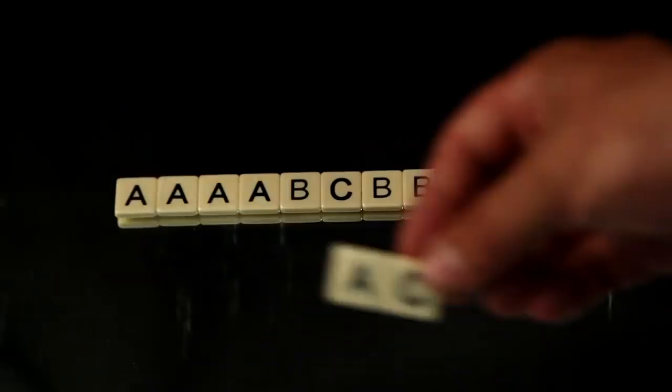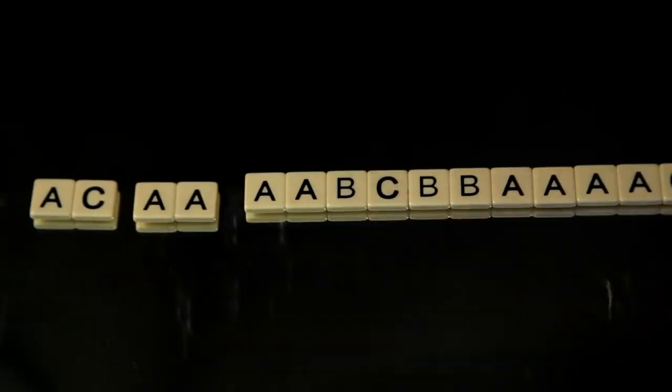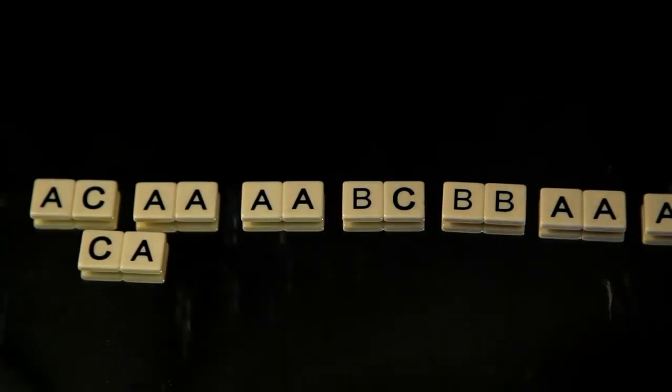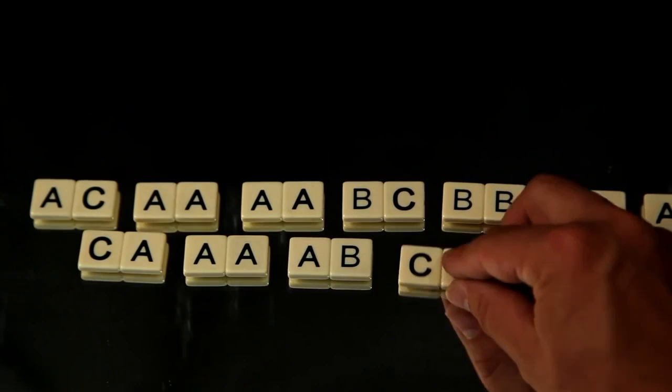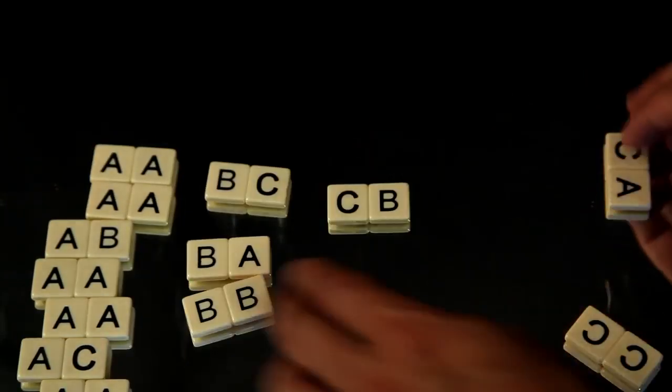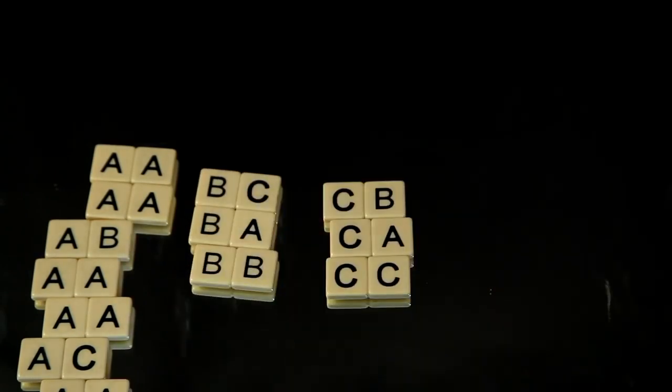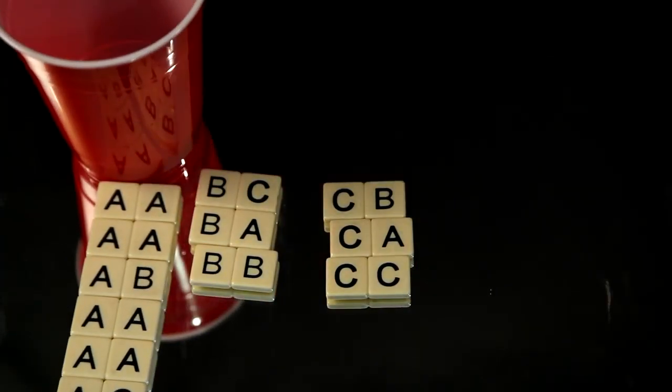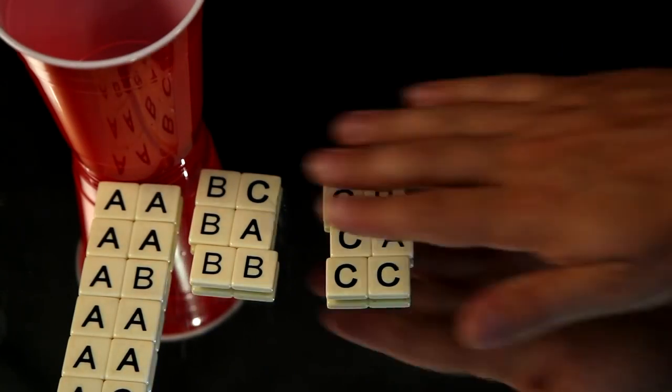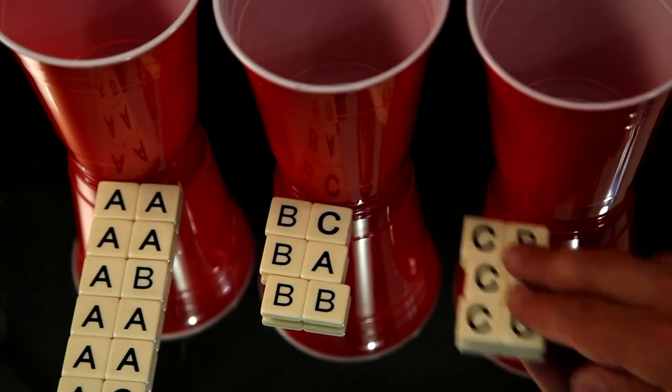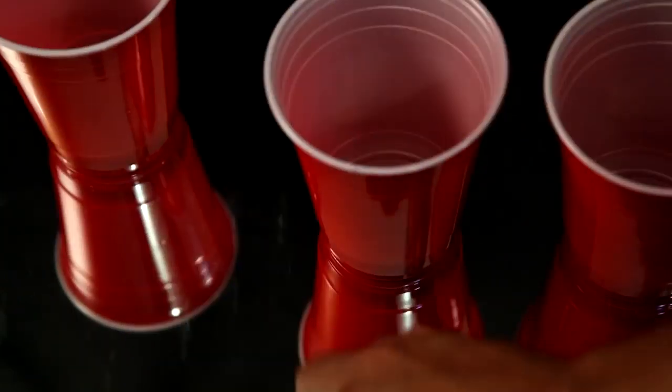The next step is key. A second order approximation takes into account each pair of letters which can occur. In this case, we need three states. The first state represents all pairs beginning with A, the second all pairs beginning with B, and the third all pairs beginning with C. Notice that the A cup has many A-A pairs, which makes sense since the conditional probability of an A after an A is higher in the original message.